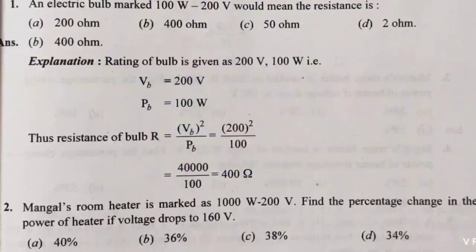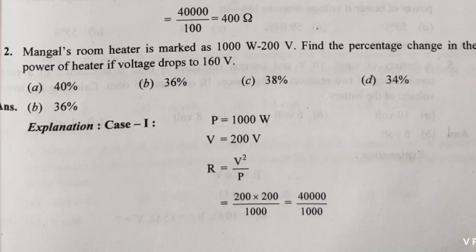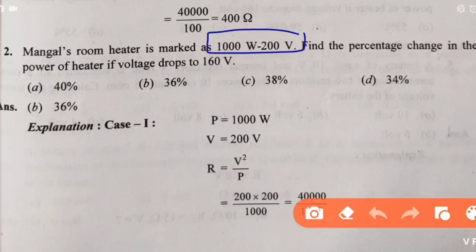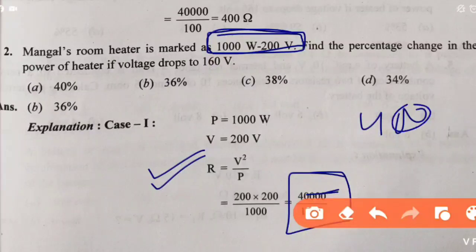Next question: A room heater is marked as 1000 watt, 200 volt. Watt means power given, volt means voltage given. Find the percentage change in power if voltage drops to 160 volt. We have two parts to solve. First, find resistance: R = V² / P = 200² / 1000 = 40,000 / 1000 = 40 ohms.